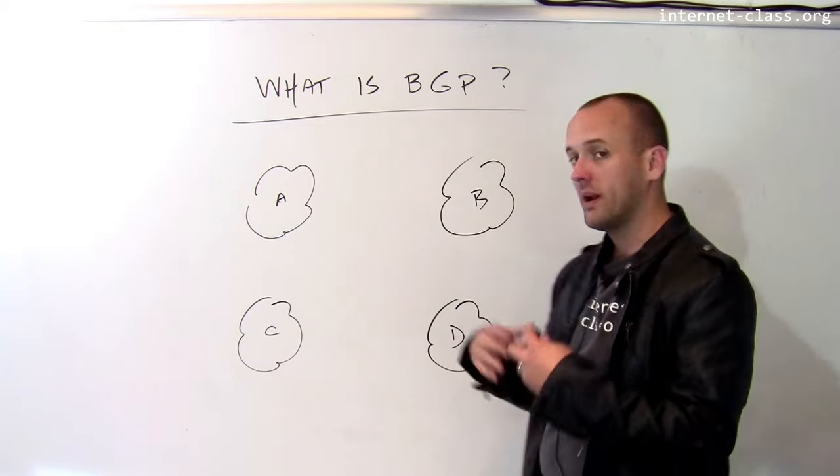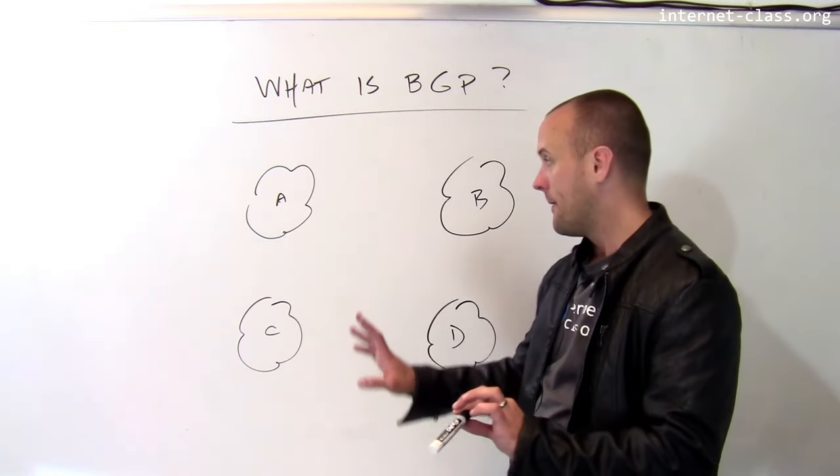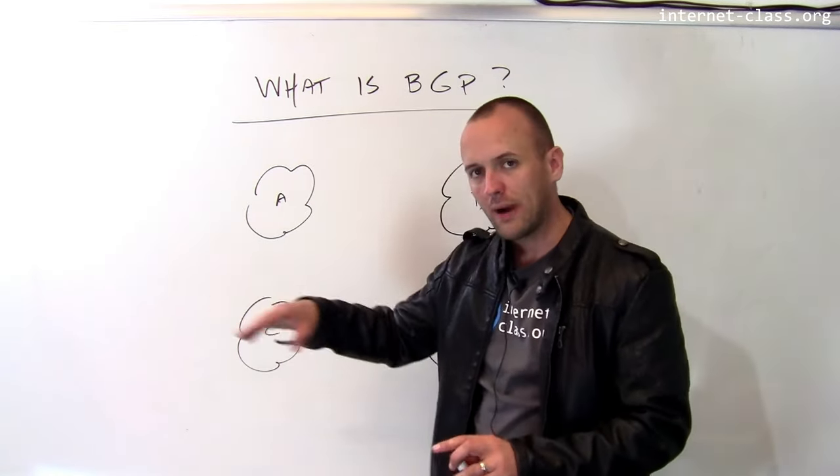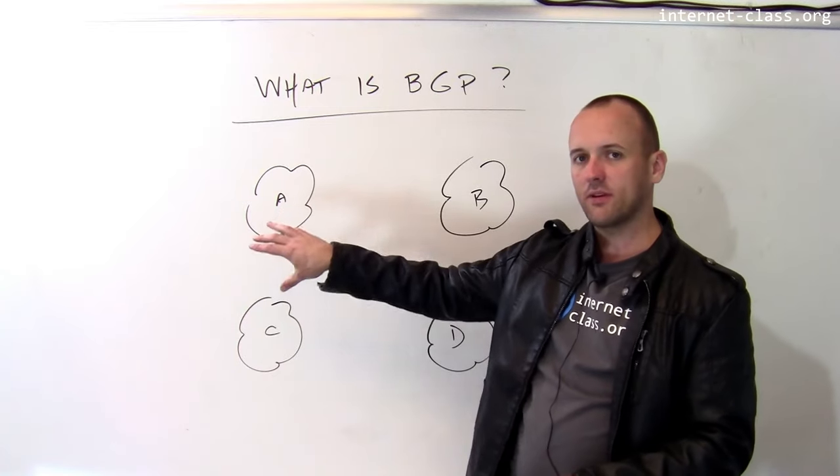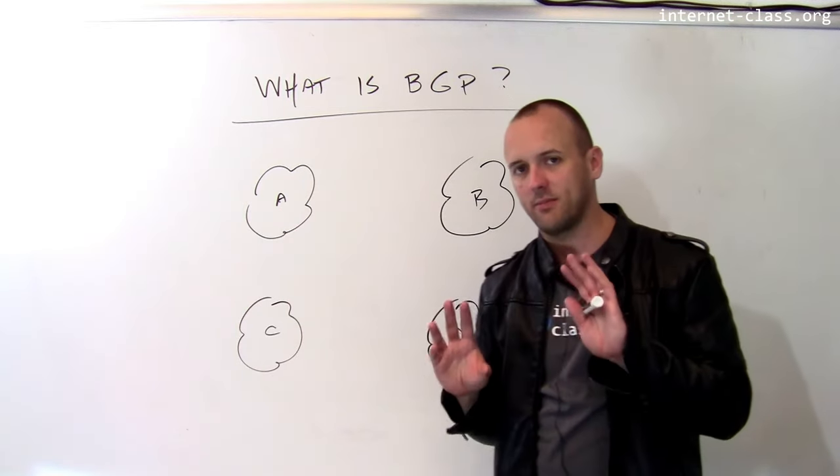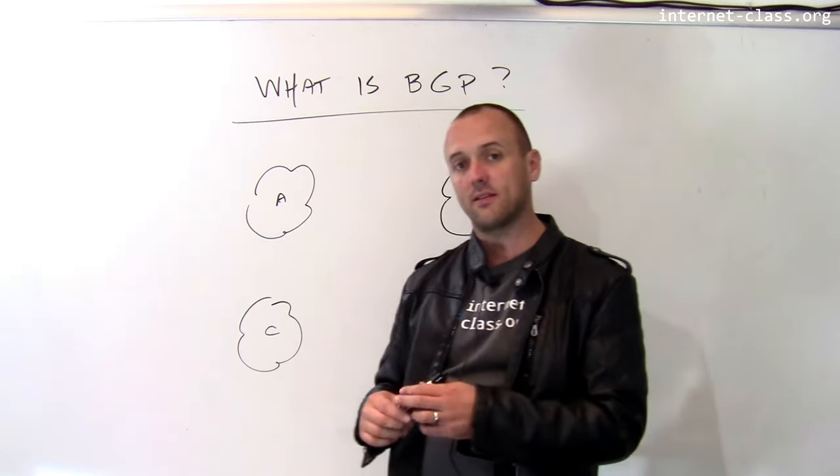So I have four computer networks or autonomous systems here. Remember that all the internal routing inside each of these networks has to be done by the autonomous system itself.